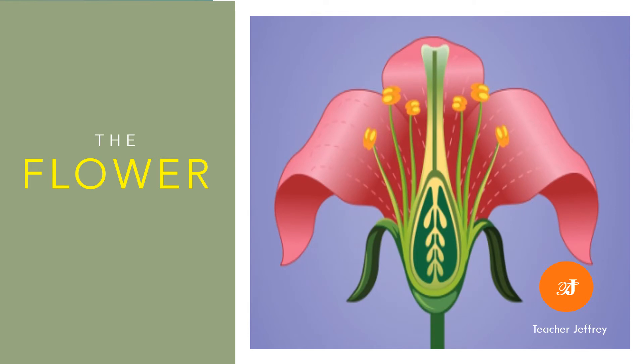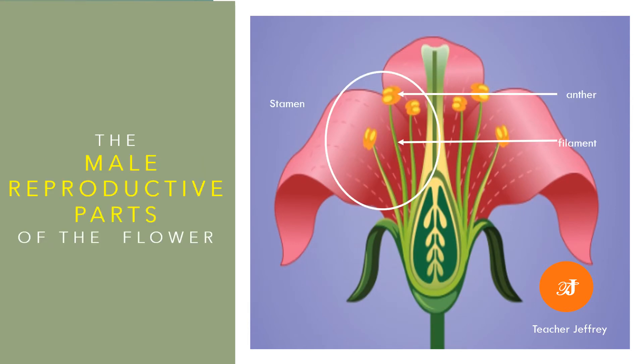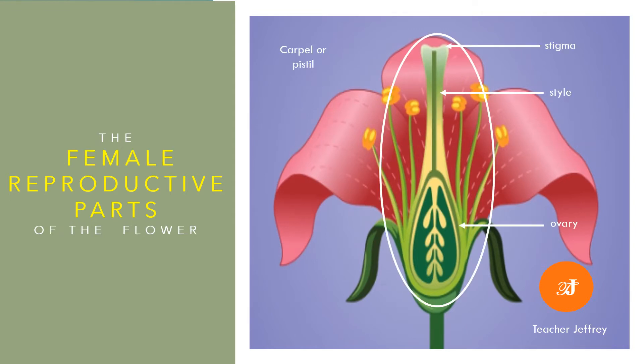This is the flower. The male reproductive part of the flower is called the stamen. It includes the anther and the filament. The female reproductive part is the carpel or pistil. It includes the stigma, style, and ovary.